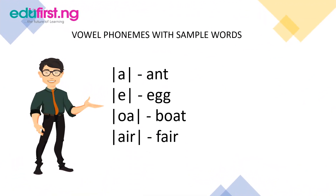We also have vowel phonemes with sample words. We have the /a/ sound for ant, the /e/ sound for egg, the /o/ sound for boat, and the /e/ sound for fair.